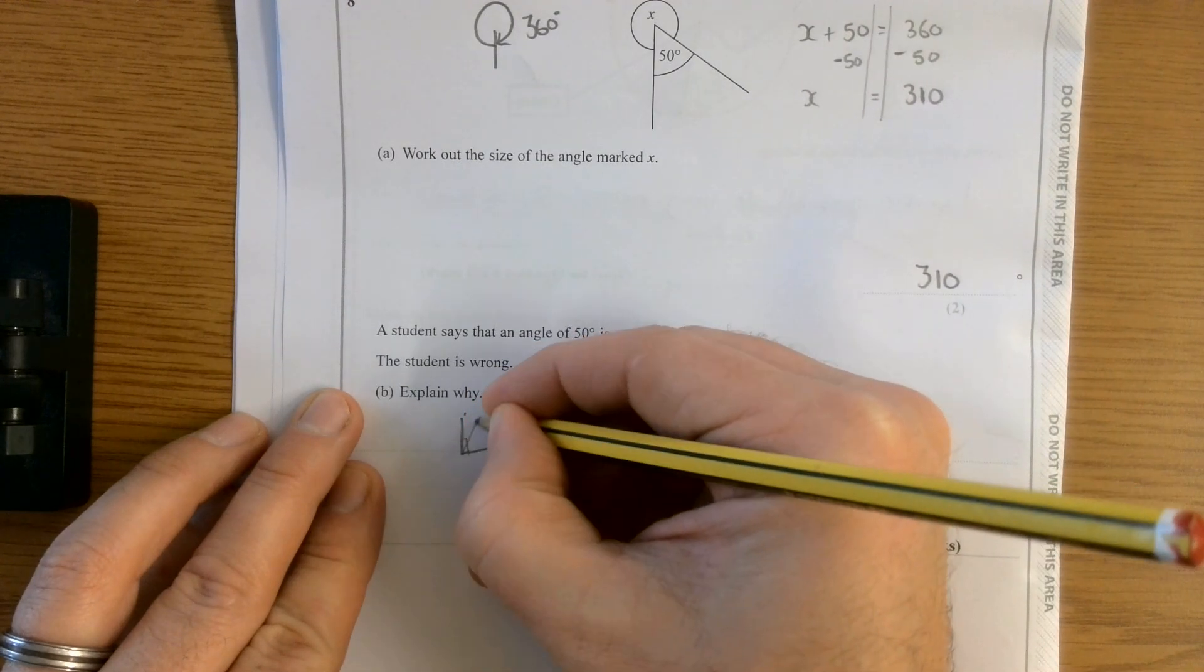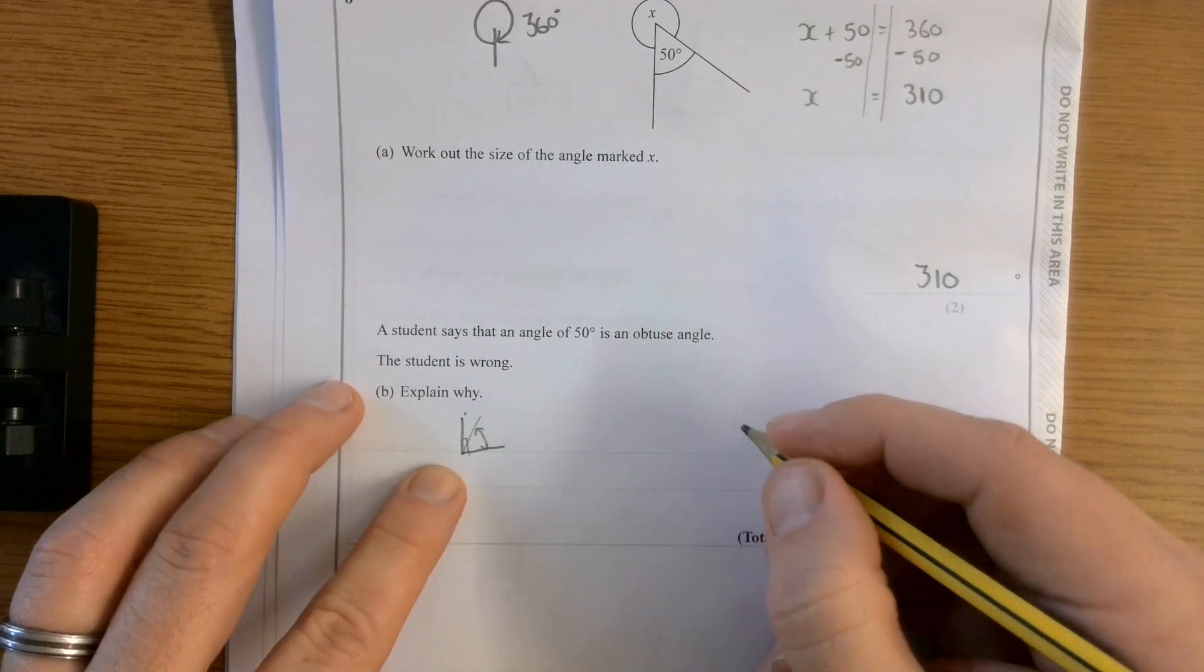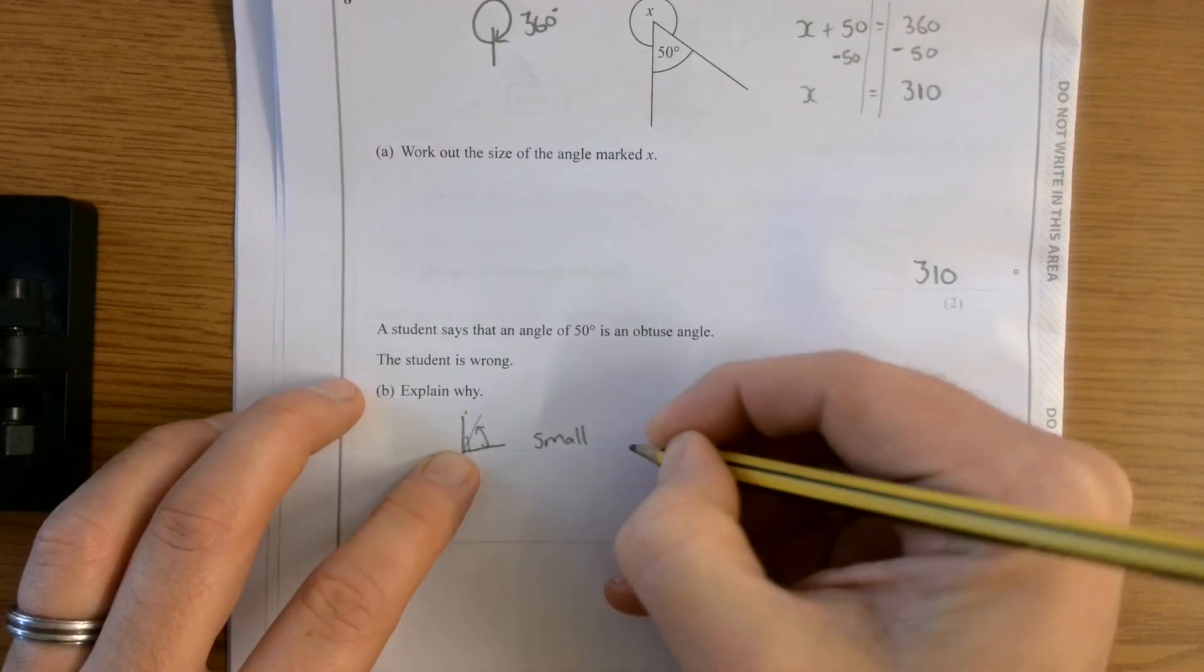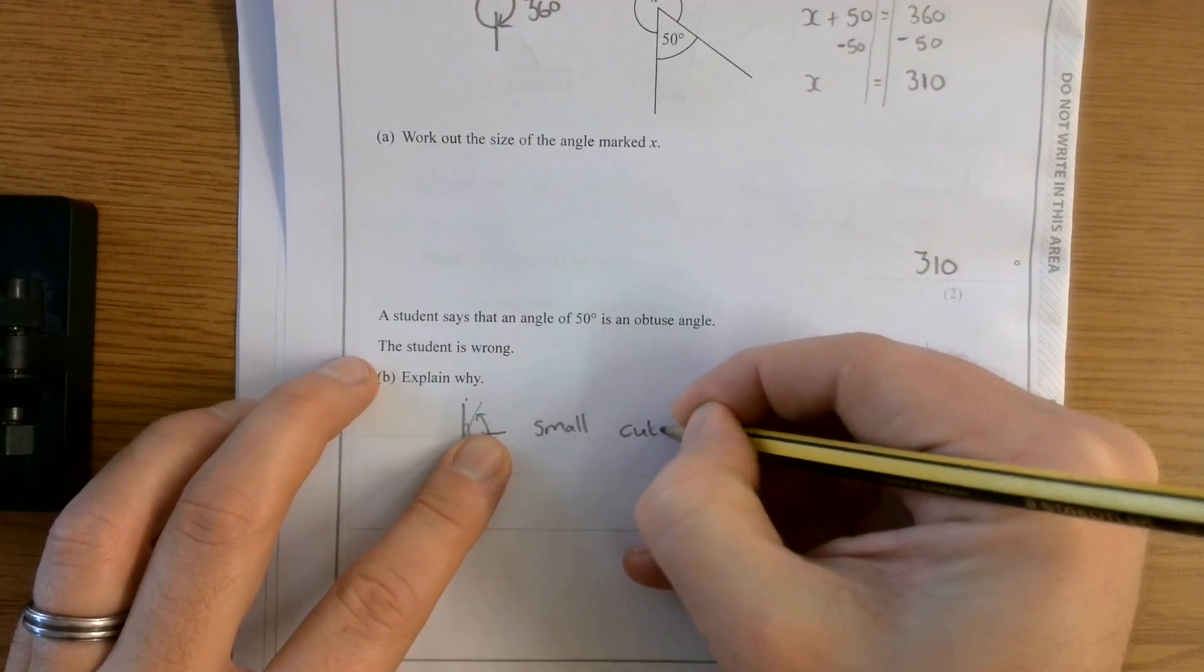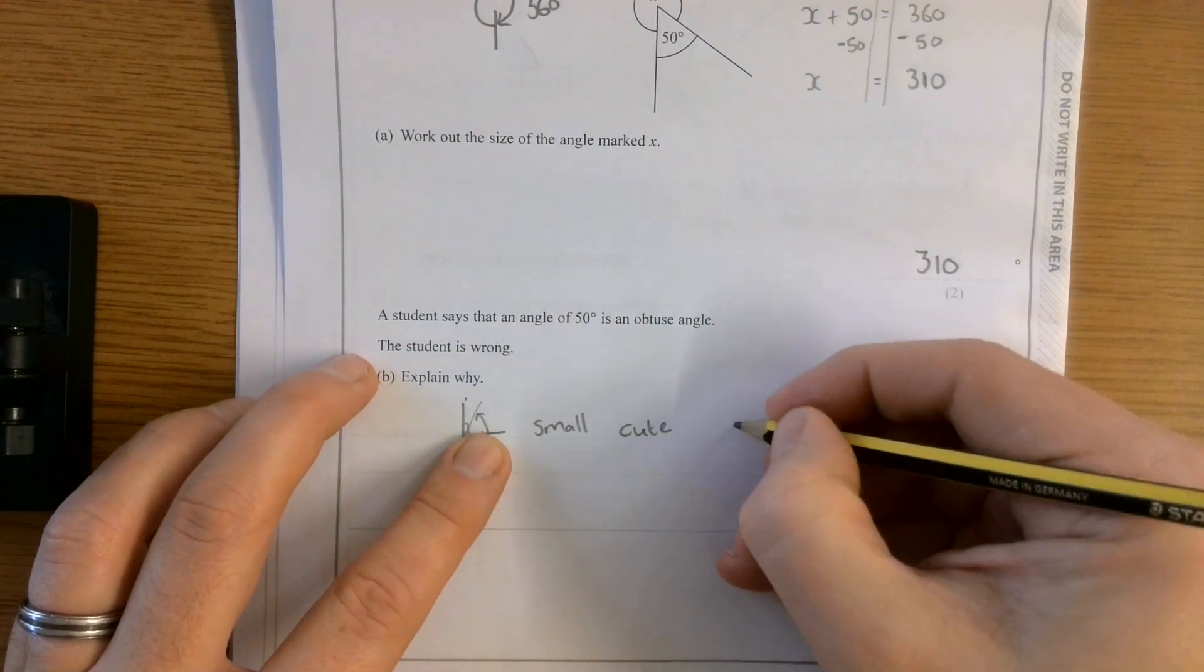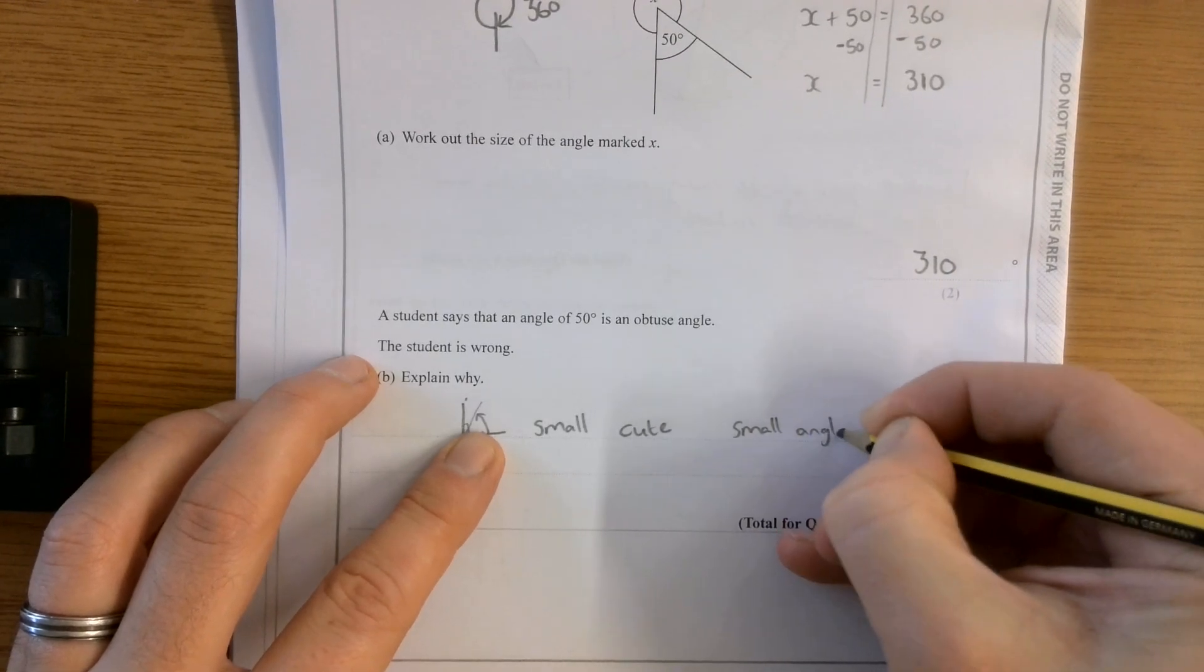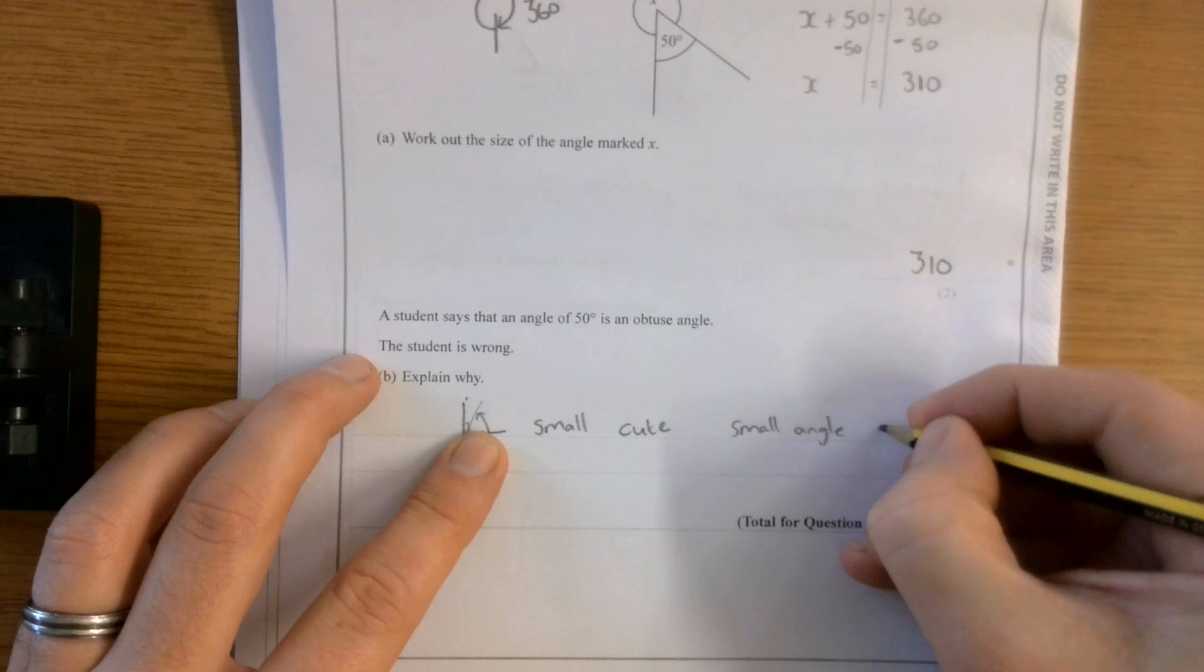That's 90 degrees. If I've got something smaller than that, it's only little. So small things, like babies and kittens, are cute. Right. So if it's small, it's cute. So if it's a small angle, like one under 90 degrees, that is acute.